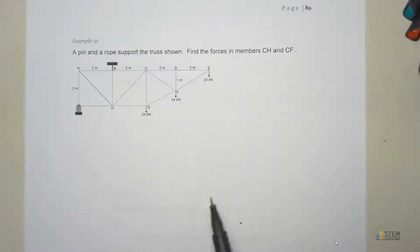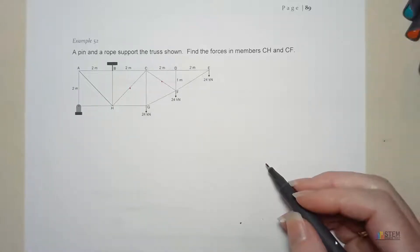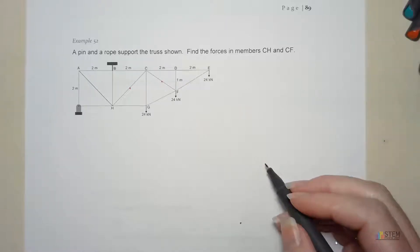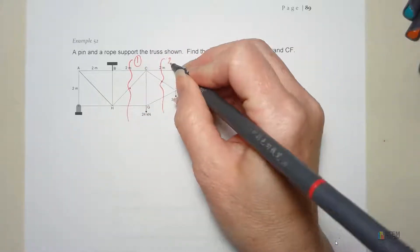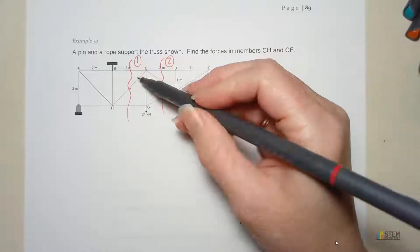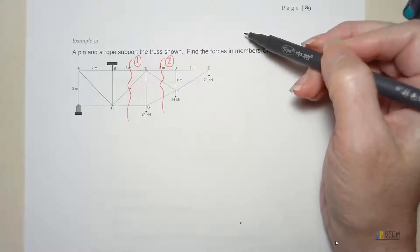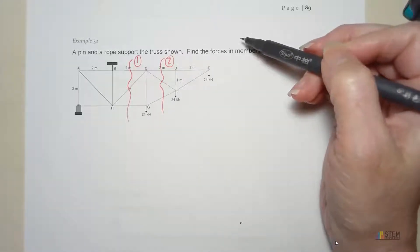Let's locate those things first. Here's CH, here's CF. Now, for method of sections, remember you can only have three unknowns at most for each of your sections, otherwise you can't solve it because you don't have enough equations. So can you all think of a way to split this thing up where we only have three unknowns? Well, I can't. So the way we're going to do it is we're going to have to make two cuts.